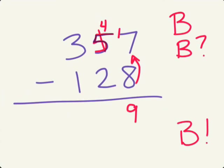Let's go on to the next place, the tens place. Is the bottom bigger? Is the 2 bigger than 4? The answer is no. So we don't need to borrow. 4 minus 2 equals 2.